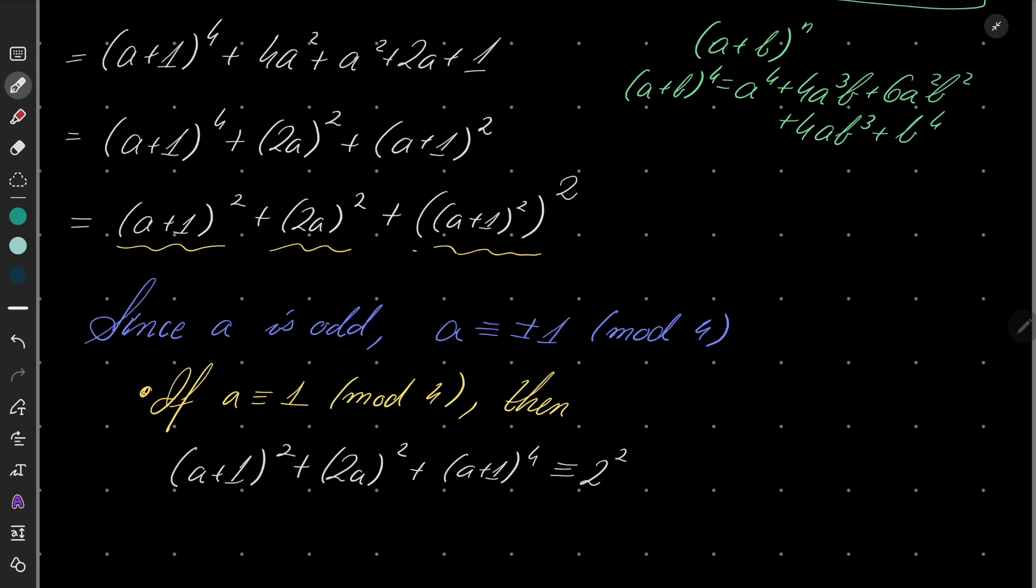we have 2^2 + 2^4. This is 4. 4 is congruent to 0. This is also congruent to 0. And this is 16. It's also congruent to 0. So, okay, nice.